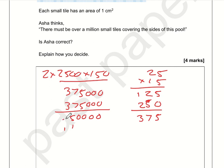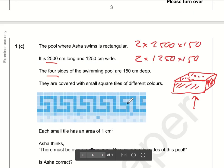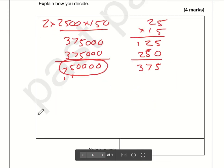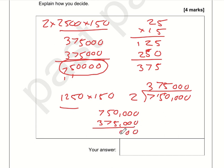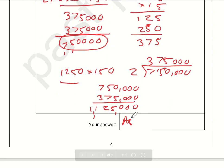The other is 1250 times 150. I've spotted that 1250 is exactly half of 2500, so all I need to do is divide 750,000 by 2, which is 375,000. So these are the two other sides. In total, it's 750,000 plus 375,000, which is 1,125,000 square centimeters. Is Asha correct? Yes, Asha is correct—there are over one million, there are 1,125,000.